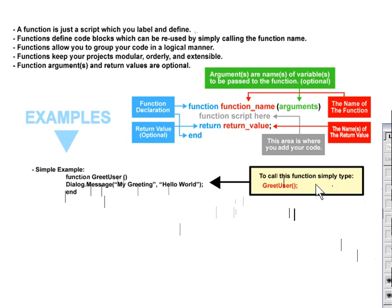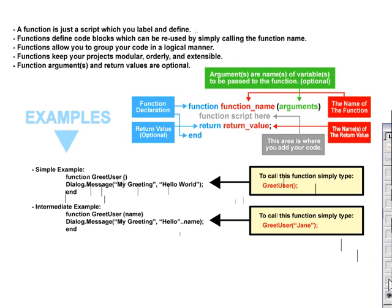Let's take a look at an intermediate example. Here we've got a slightly more complex example of the same function. In this particular case you can see that we're passing an argument to our function. We've defined our function, named it greetUser, but we've got an argument here in the brackets: the name.